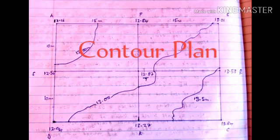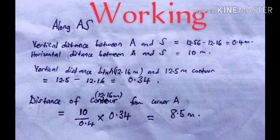To acquire the actual distance of the contour from any corner, for example along AS, we are required to find the vertical distance between A and S, and also the vertical distance between any corner and the elevation of the contour. Then the distance of the 12.5 meter contour from corner A can be obtained as shown.